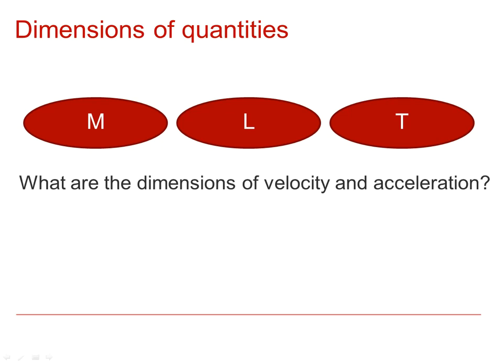As an example, consider finding the dimensions of velocity and acceleration. First we look at velocity. We know that velocity's units are meters per second, that's meters second to the minus one. If we know that the units are meters second to the minus one, then that is a length and time minus one.